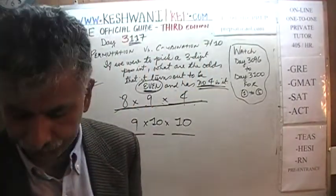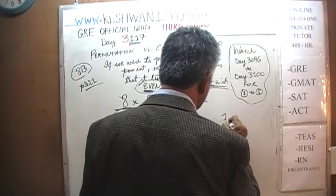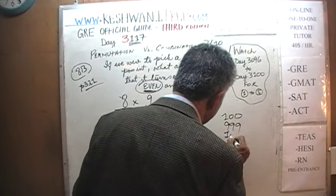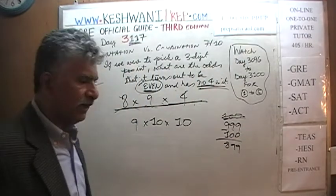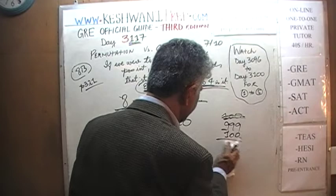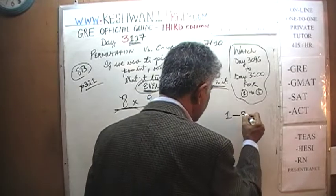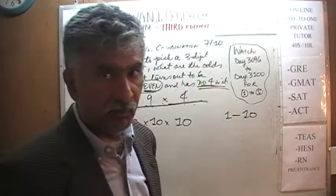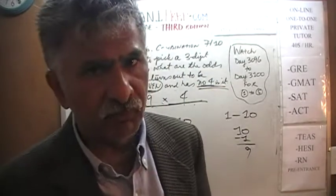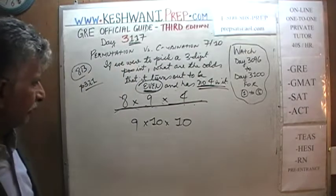Three-digit positive integers go all the way from 100 to 999. We cannot simply subtract 100 from 999 and claim there are 899 — there are 900. Just like if someone asks how many positive integers are there from one to ten: you cannot subtract and say nine. There are ten of them. You have to add one after the subtraction. So there are nine hundred.